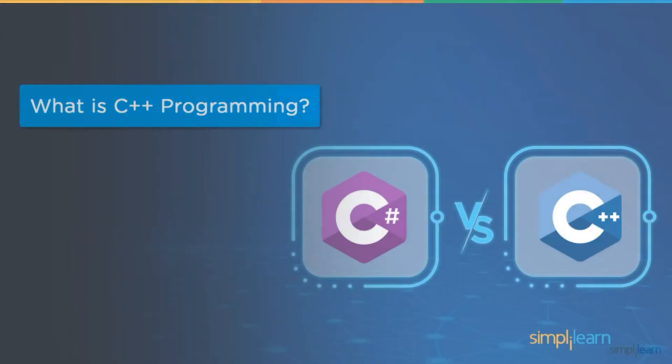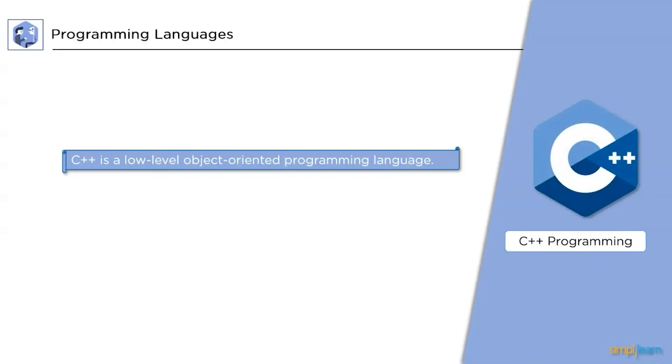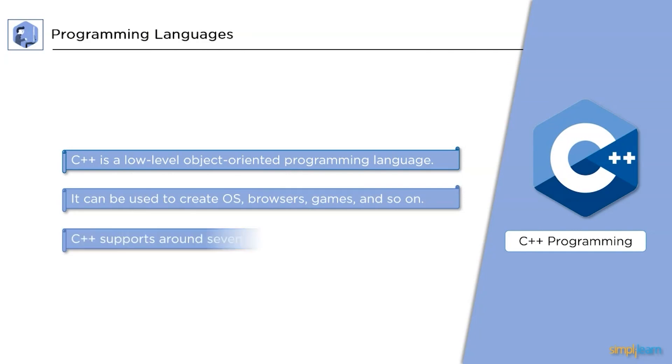Now let's discuss what is C++ language. C++ is also a general purpose programming language. C++ supports seven styles of programming like functional programming, structured programming, or object-oriented programming. It is also used in creating operating systems, browsers, and games.